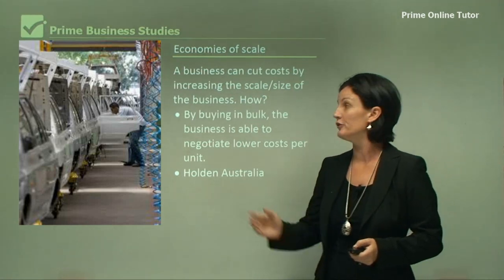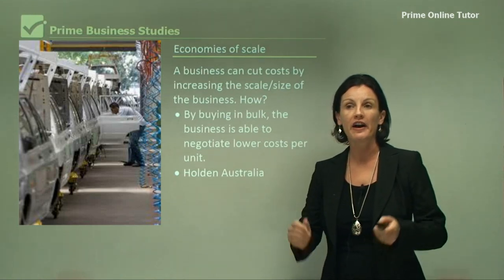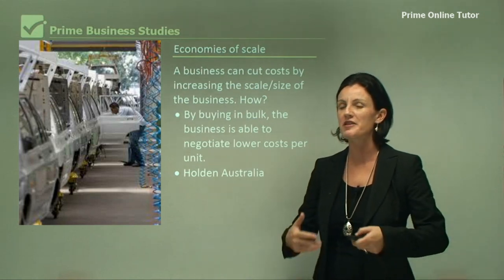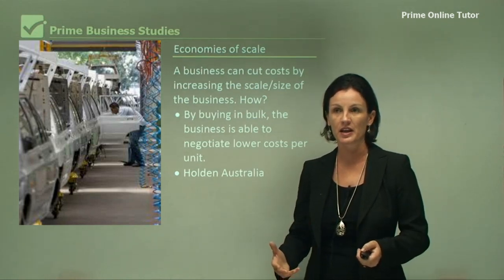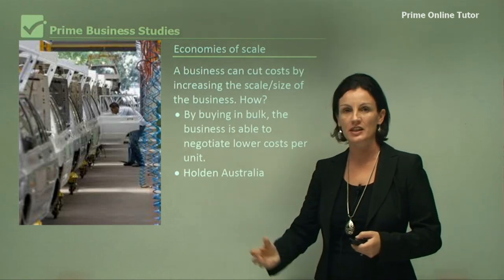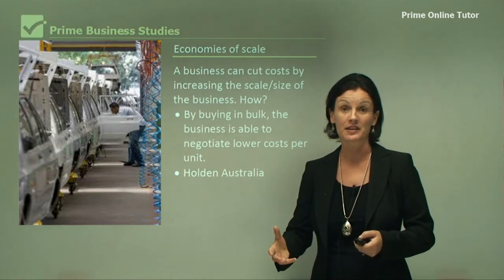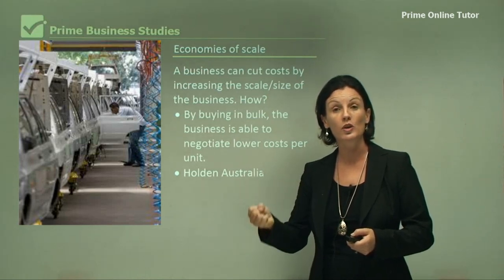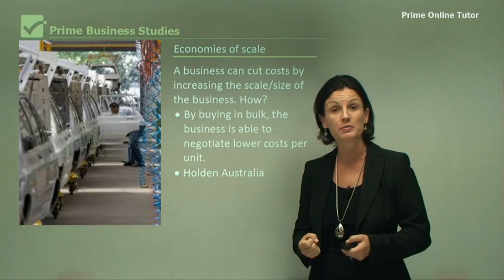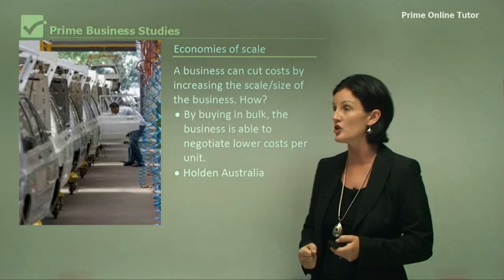Now if we look at the example of Holden Australia making their cars — Holden Australia have a very large plant. They produce on mass thousands and thousands of cars. The inputs come in in tonnes of steel and rubber. So they're using economies of scale to negotiate lower costs with their suppliers. It's a very successful model and more and more global businesses are trying this strategy.